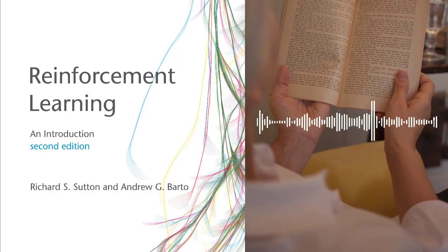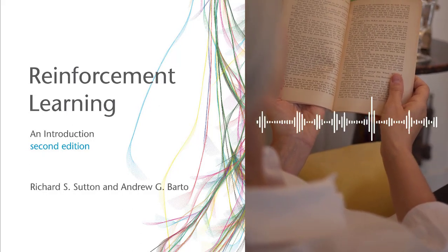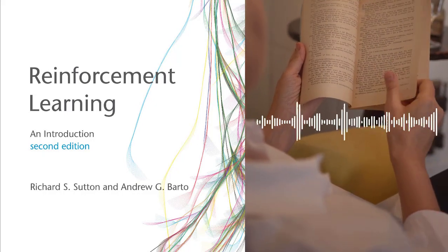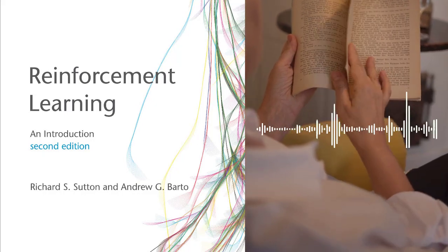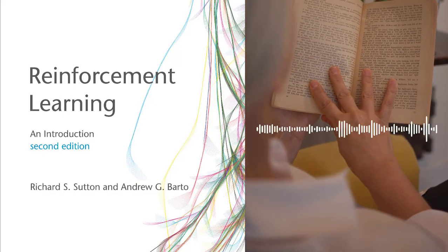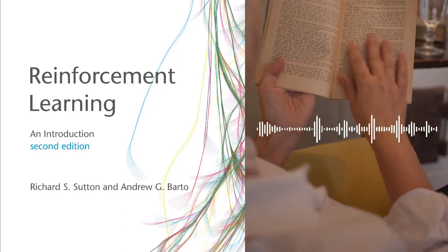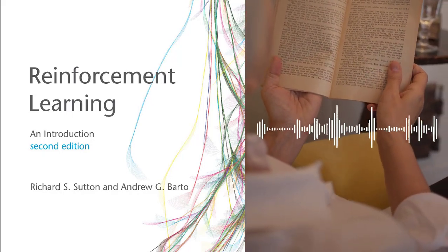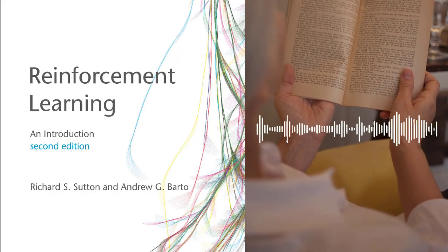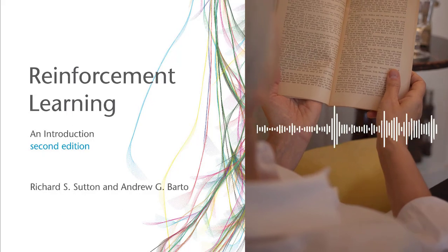Chapter 3 – The Reinforcement Learning Problem: Chapter 3 introduces the reinforcement learning problem and the terminology used in the field. The authors describe the different types of reinforcement learning problems, including prediction problems and control problems. They also introduce the concepts of policies, value functions, and models.